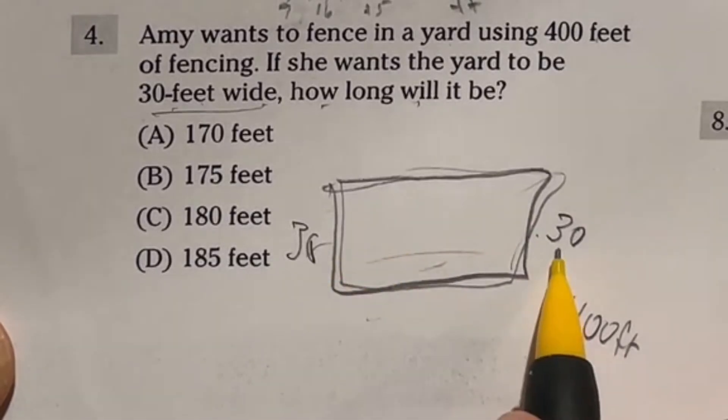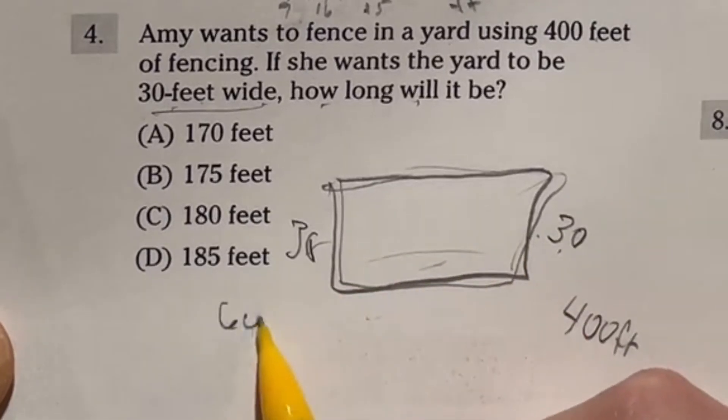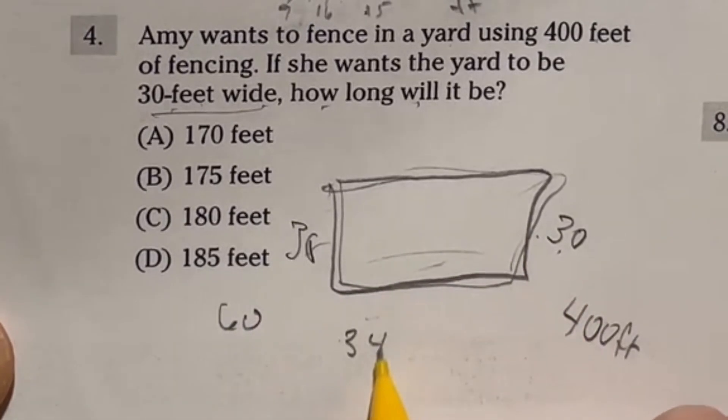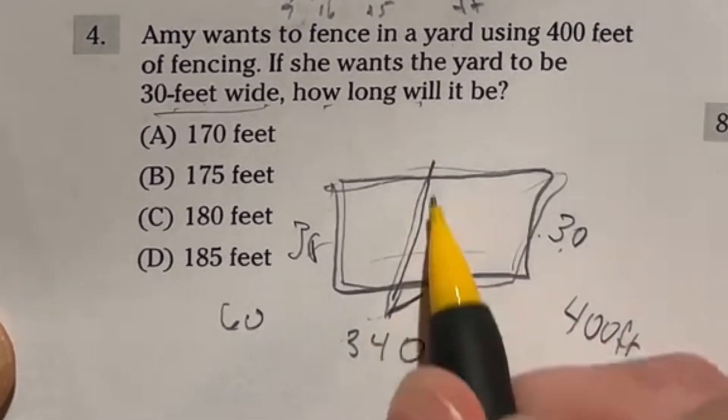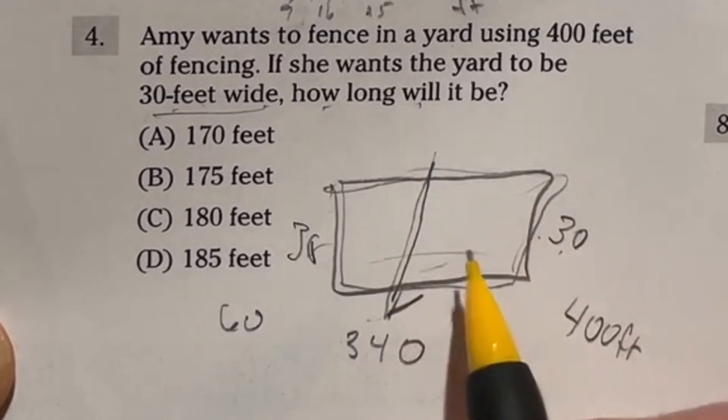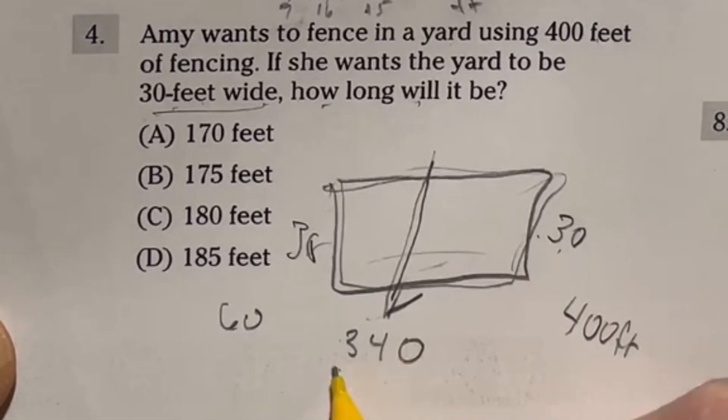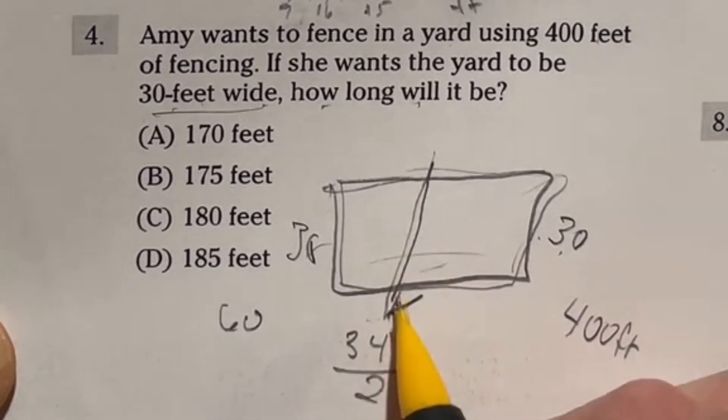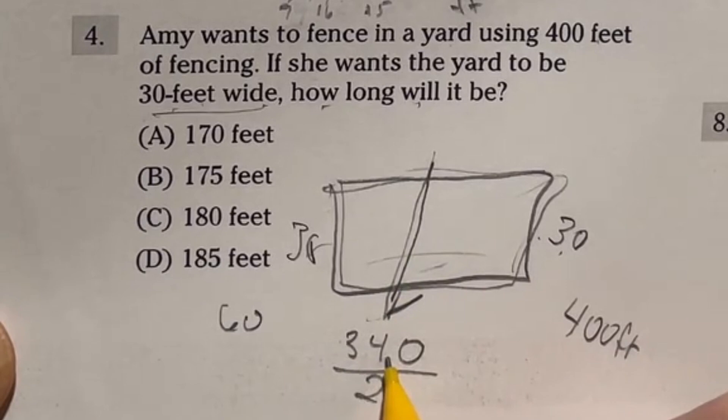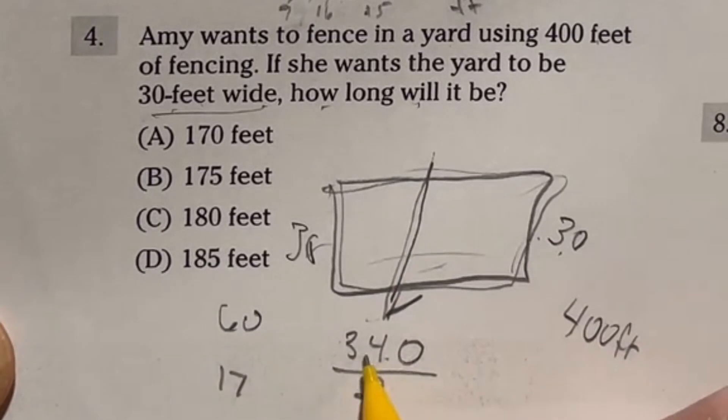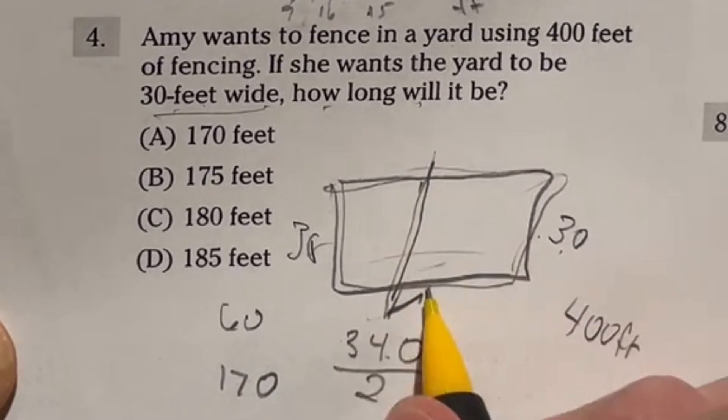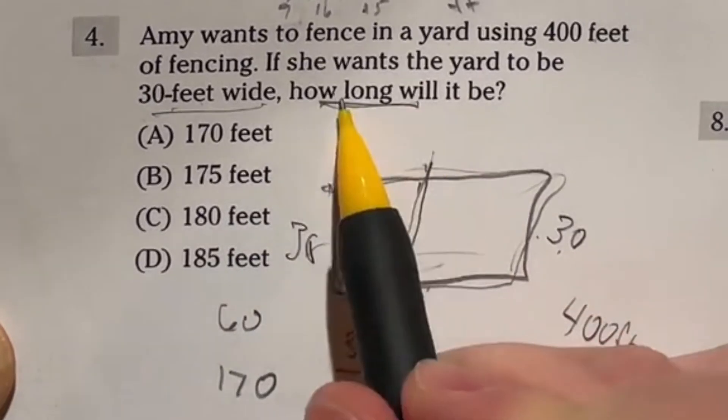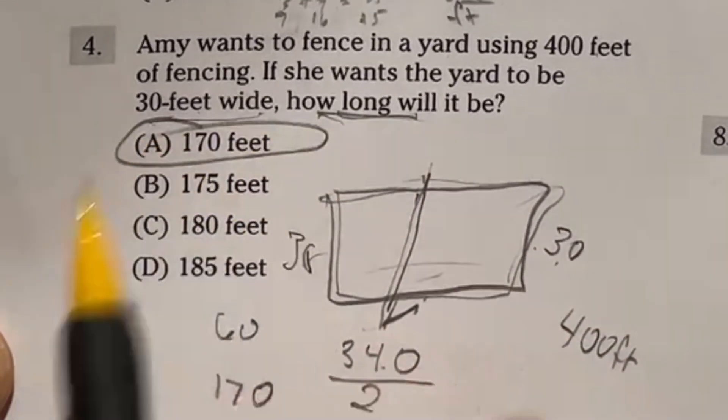And that's going to be 30 and 30 for a total of 60. That means we still have 340 left to use. So that means I need to split that 340 to this side and this side in order to get our total amount of fencing here. Now with that said, if I just cut this in half, that's going to tell me how much goes to each. Well, what is 34 cut in half? 17. So that means 340 cut in half is going to be 170. So that means we're going to go 170 on each side here. So that's how long it will be. Our final answer is 170.